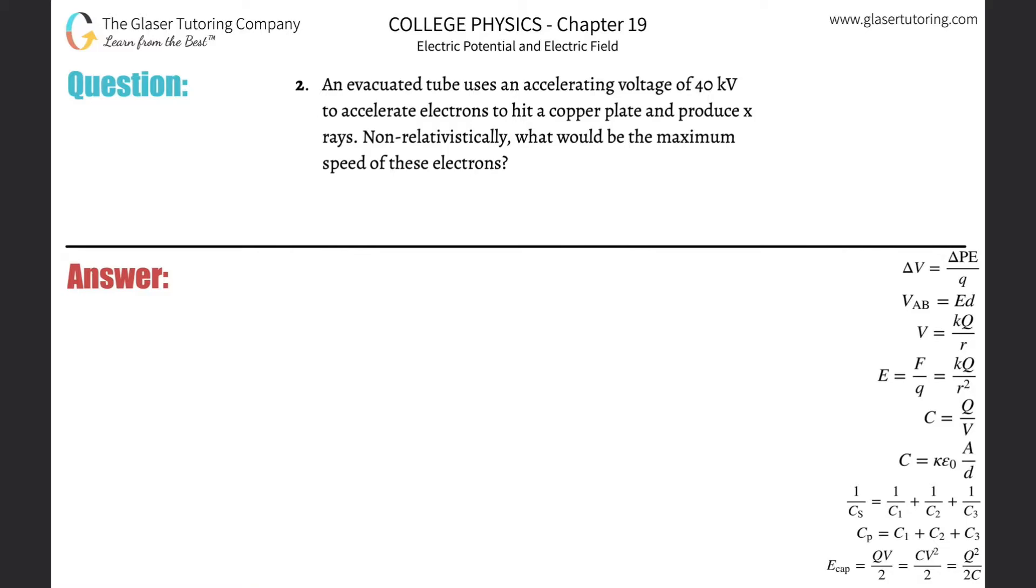Number two, an evacuated tube uses an accelerating voltage of 40 kilovolts to accelerate electrons to hit a copper plate and produce x-rays. Non-relativistically, what would be the maximum speed of these electrons? Alright, so basically we have an electron.